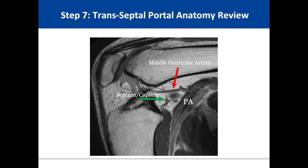Before making the transeptal portal, a review of the posterior knee anatomy is recommended. This is an example of a flexion MRI highlighting the posterior septum, directed by the green arrow, and its relation to both the popliteal artery (PA) and the middle genicular artery, pointed out by the red arrow. The middle genicular artery can be seen perforating through the posterior capsule along the superior margin of the fat-filled posterior septum space.